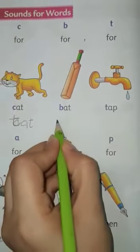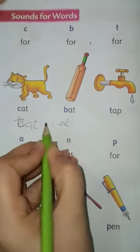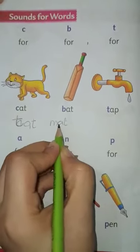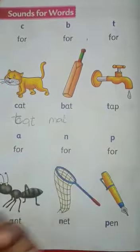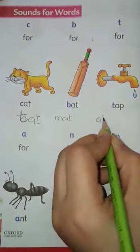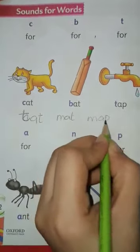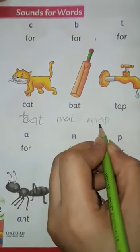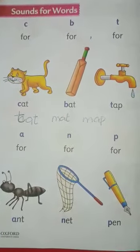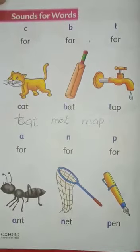If we write M, it becomes M, A, T — Mat. If we write M, A, P — Map. So, simple! Just like that we are joining the letters and making a word.